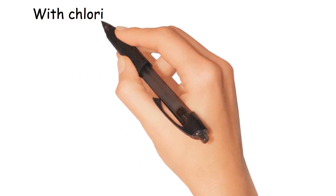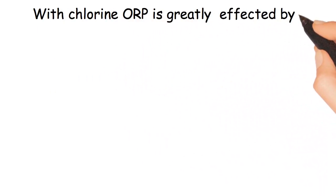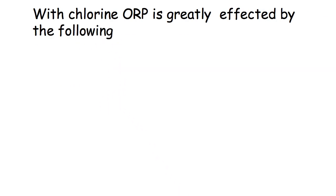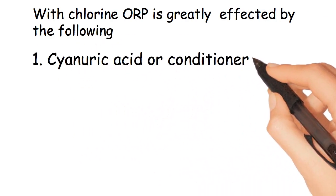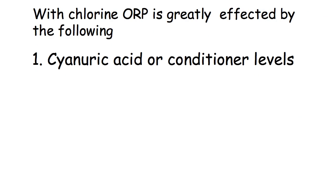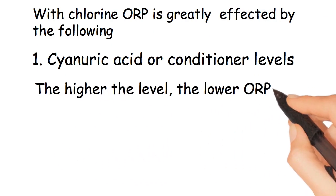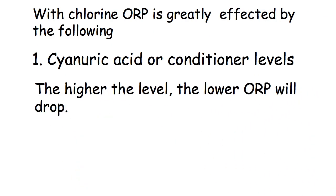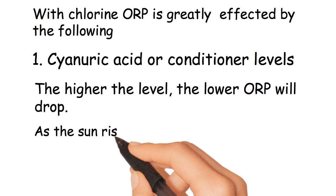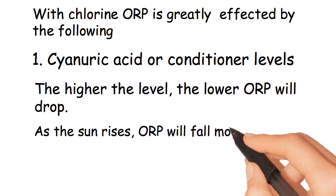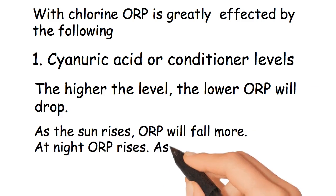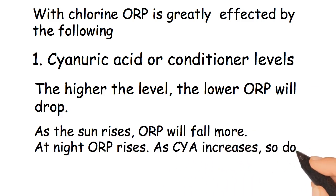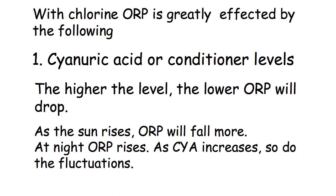With chlorine, ORP is greatly affected by the following. Variable 1: Cyanuric acid, or conditioner, levels. The higher the level, the lower ORP will drop. As the sun rises, ORP will fall more, and at night ORP rises. As CYA increases, so do the fluctuations.